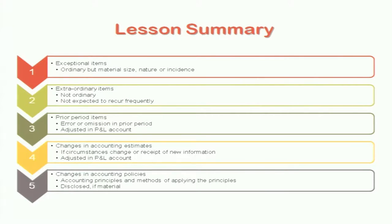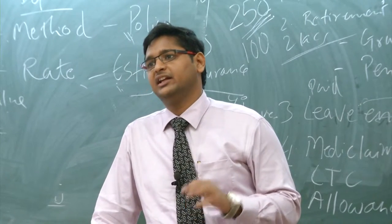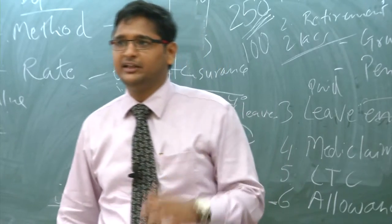So we discussed five important items. One is exceptional items — which are ordinary but exceptional in the current year. There are extraordinary items — which are not ordinary — and hence you should disclose them separately. There are prior period items — which are the result of error or omission in the previous year; you came to know about it in the current year and hence you adjust and show it as a prior period item. Then there are changes in accounting estimates, which have to be adjusted in your income and expenditure account. And there are changes in accounting policies — any change you have to disclose, apply it in your profit and loss or income and expenditure account, and disclose the impact including any effect on your balance sheet.